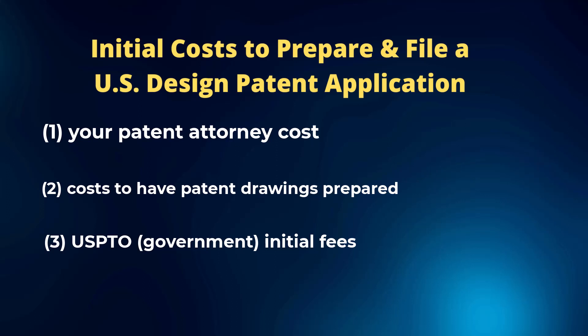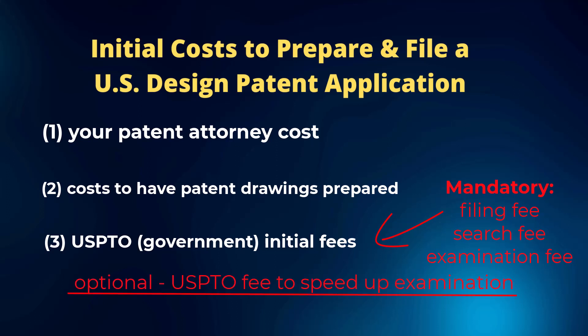For the initial governmental fees, the USPTO — the United States Patent and Trademark Office — at the very minimum you're going to be paying a filing fee, a search fee, and an examination fee. We'll jump over to the USPTO.gov website and show you what those fees are. Also, with respect to the USPTO initial governmental fees, there is an optional fee — not always required — but if you want to speed up the examination process, you can trigger an additional fee at the patent office. That will also generally entail an additional patent attorney fee because speeding up examination requires a prior art search. But that's an optional process; it's not mandatory.